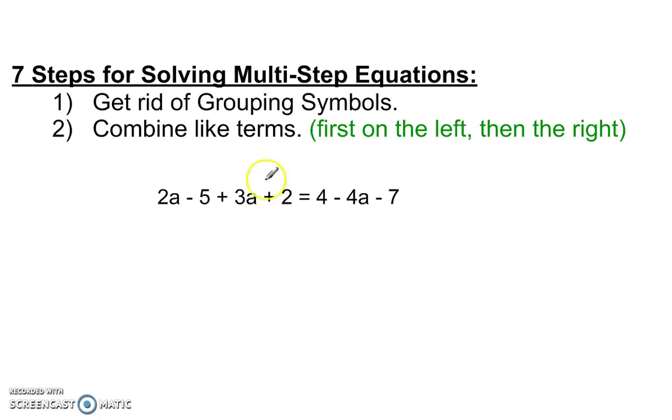Combine like terms. First we'll look at the left side, see what are like terms here. 2a and positive 3a. So we can combine those, we get 5a. And then negative 5, remember the sign in front of a number always goes with the number. And positive 2, that gives us negative 3, is equal to, let's look at the right side now.